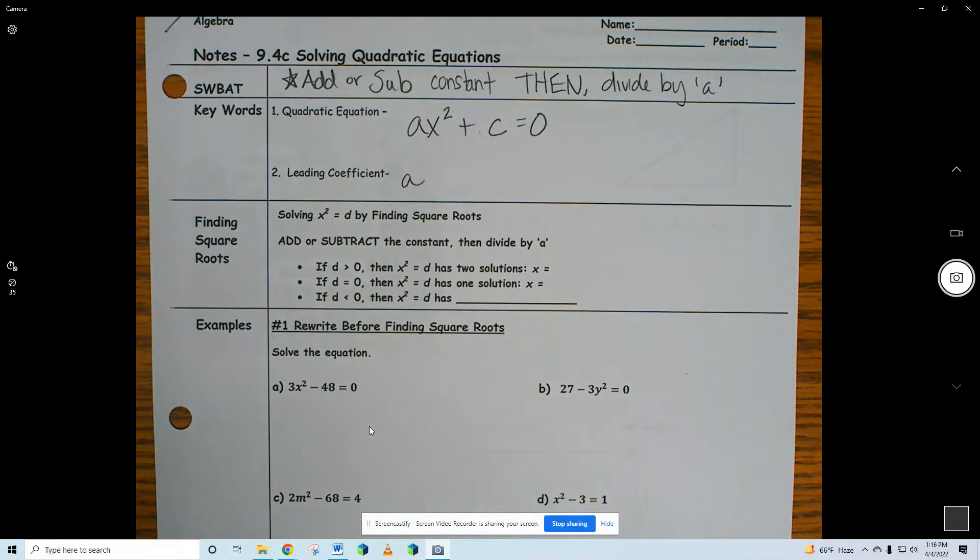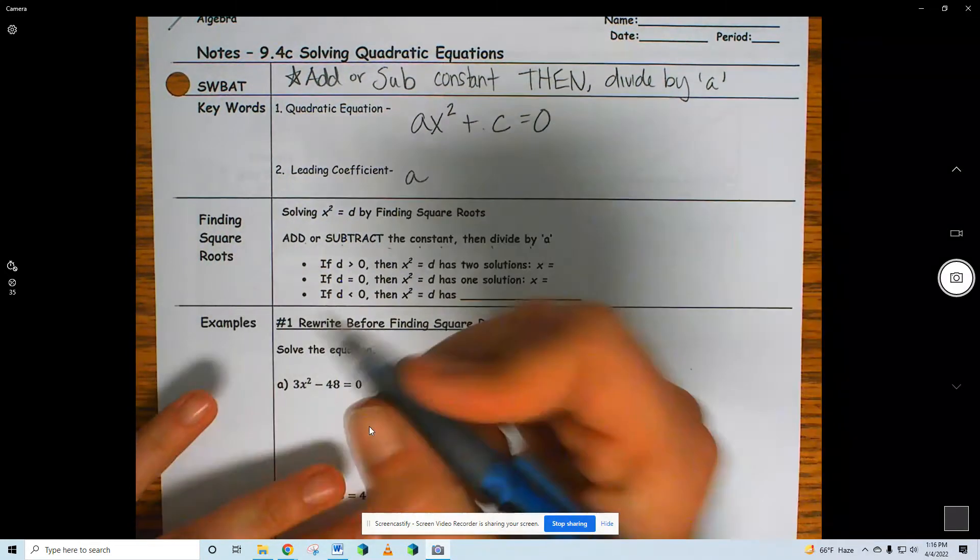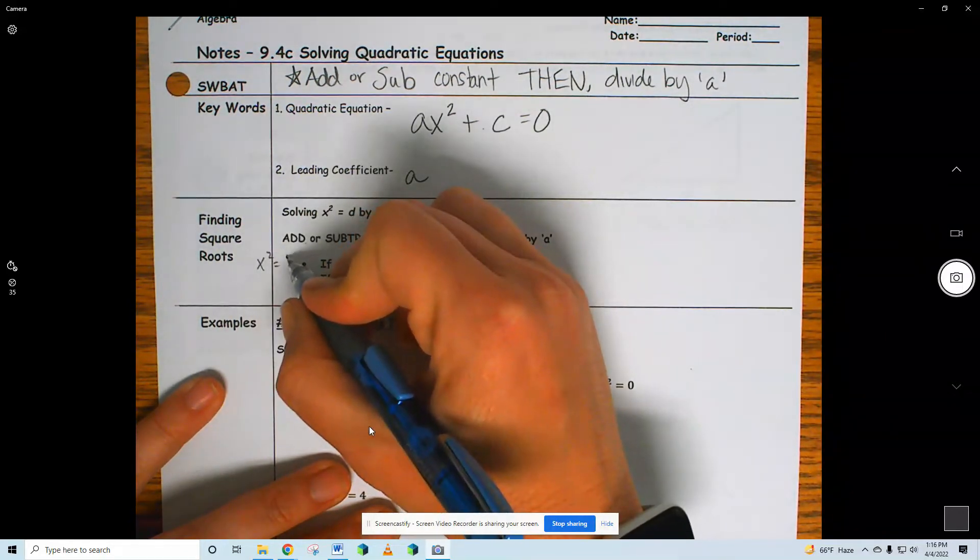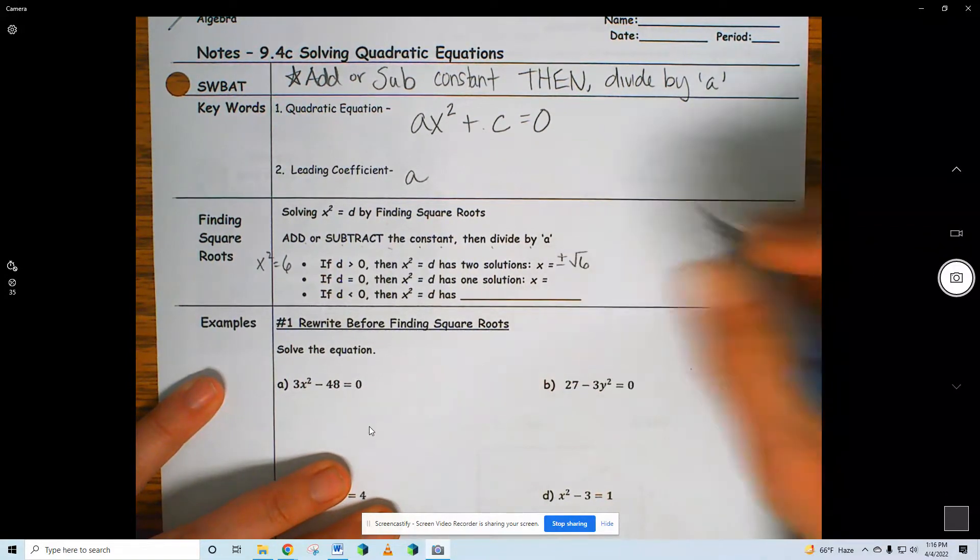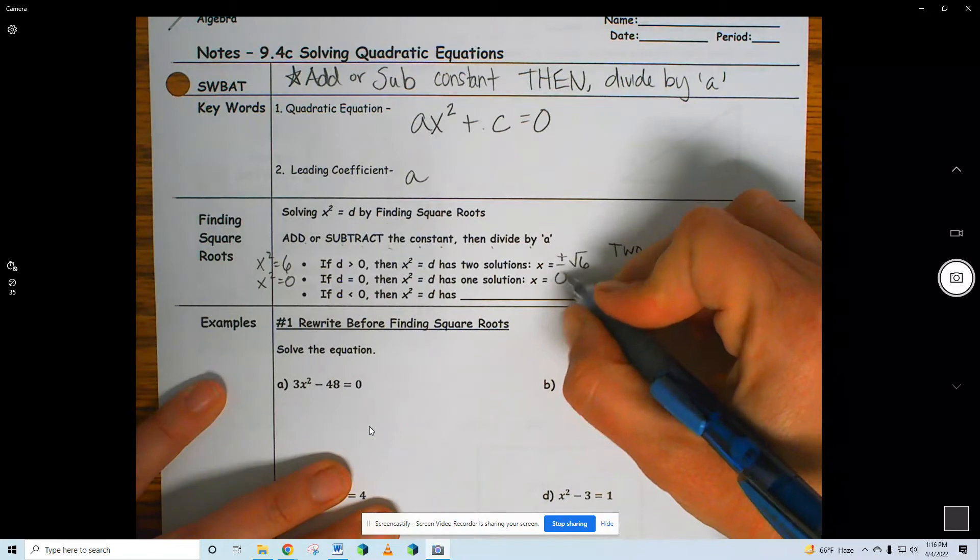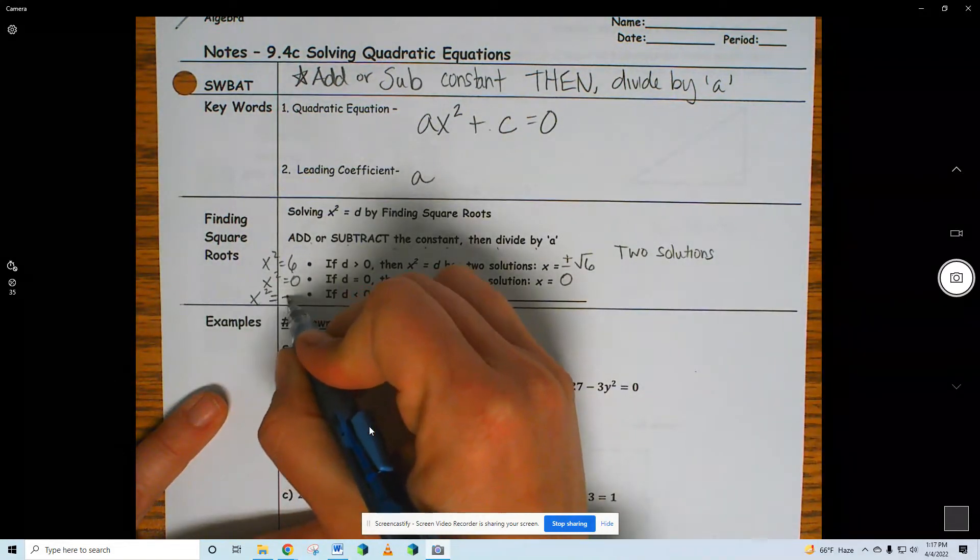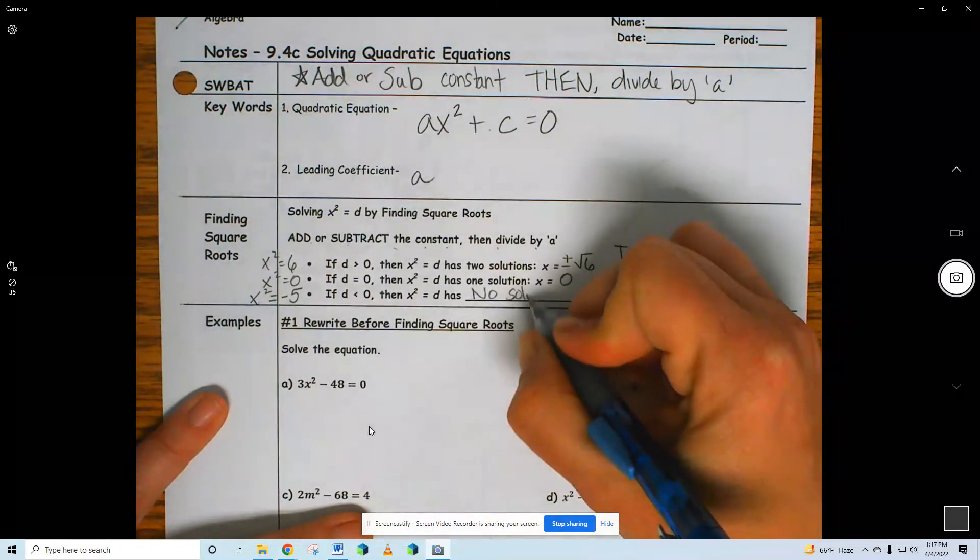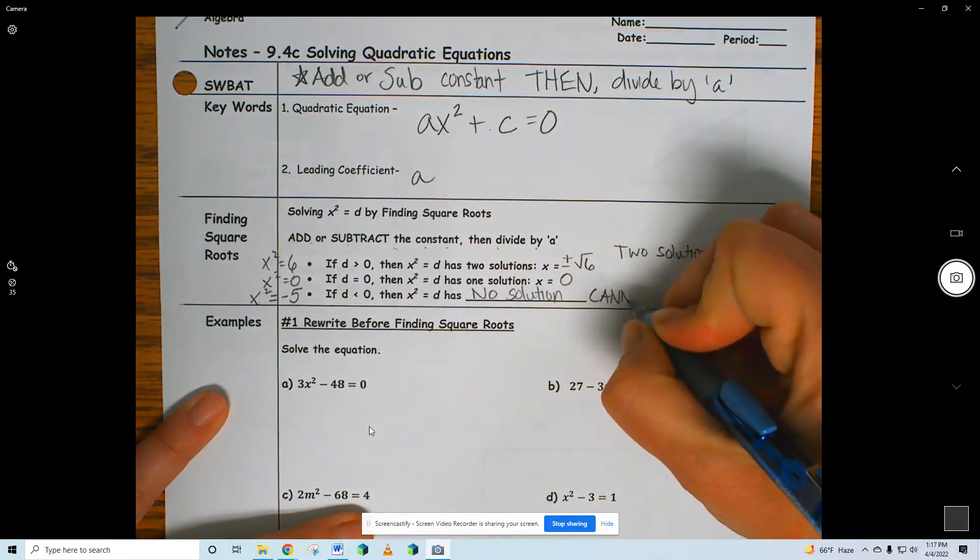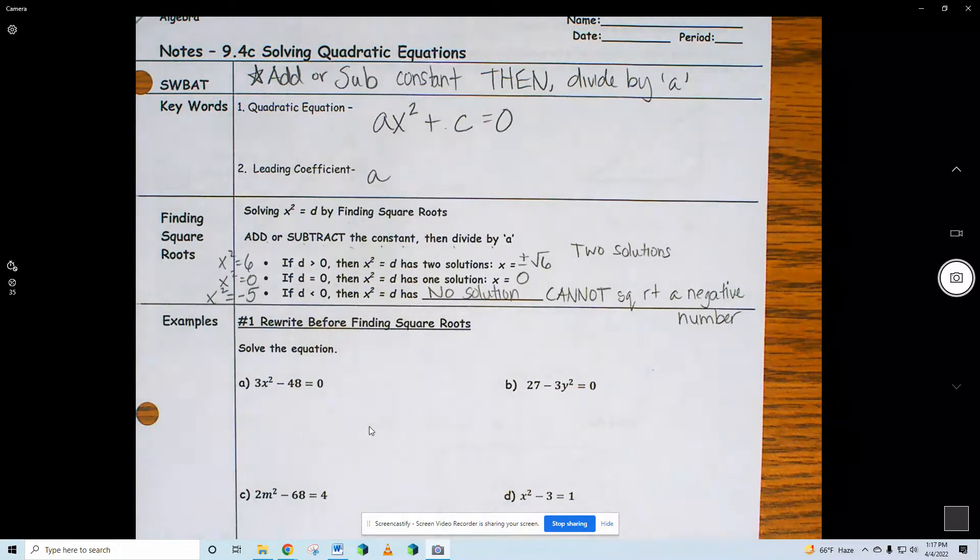We're going to add or subtract the constant and then divide by a. Remember, if I get a positive number, x squared equals like six, then I'm gonna have plus or minus radical six, two solutions. If I got like x squared equals zero, then it has one solution, zero, not even plus or minus, just zero. If I have a negative, negative five, whatever, no solution. You cannot square root a negative number.